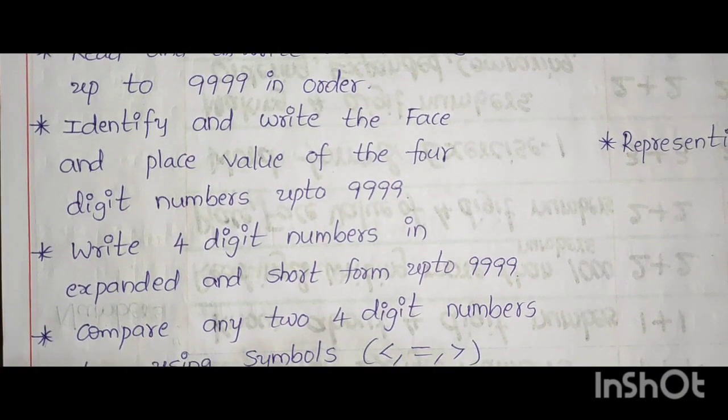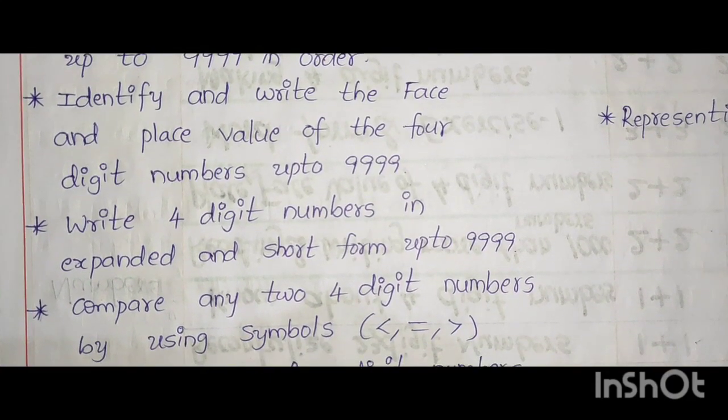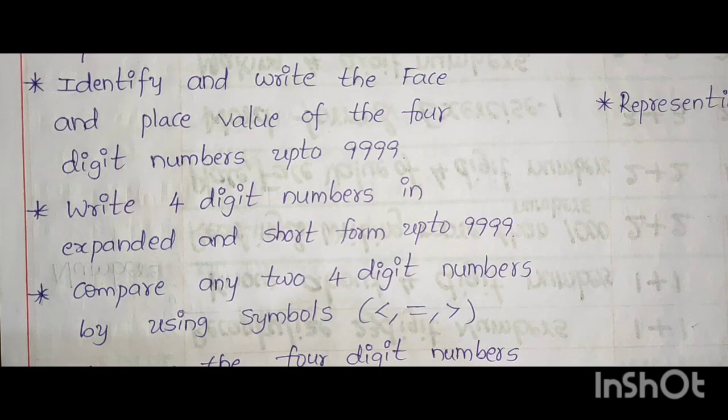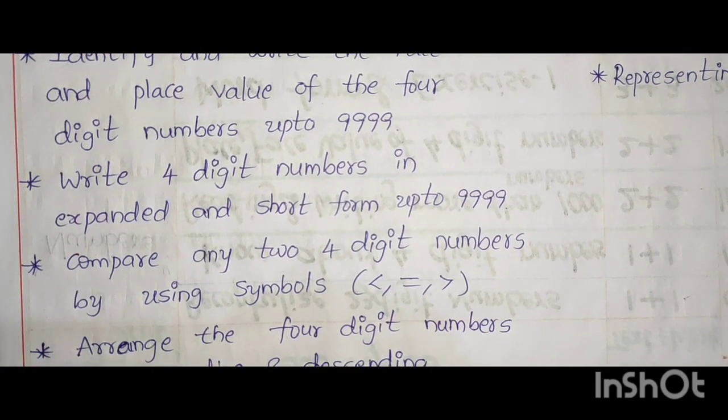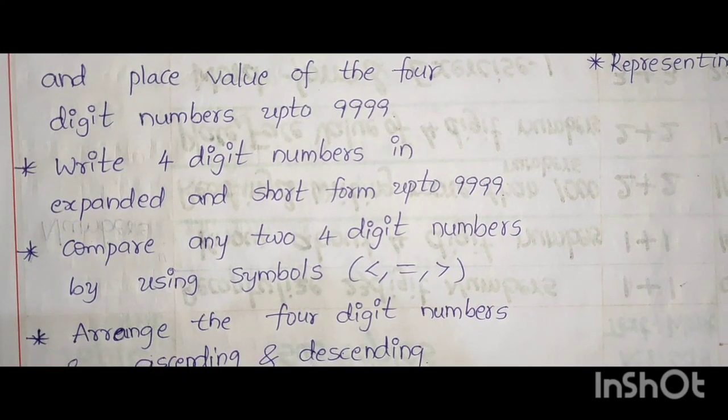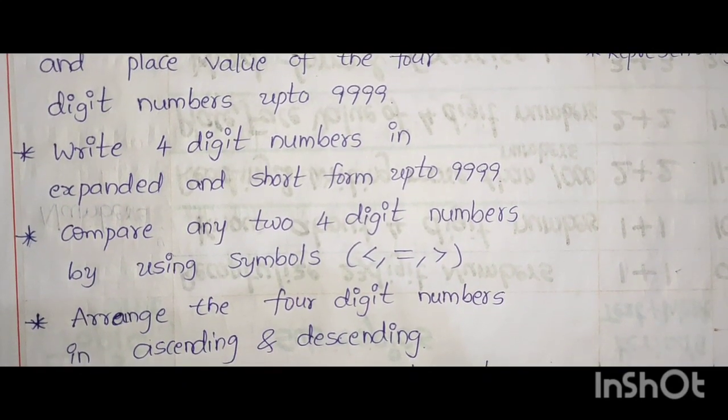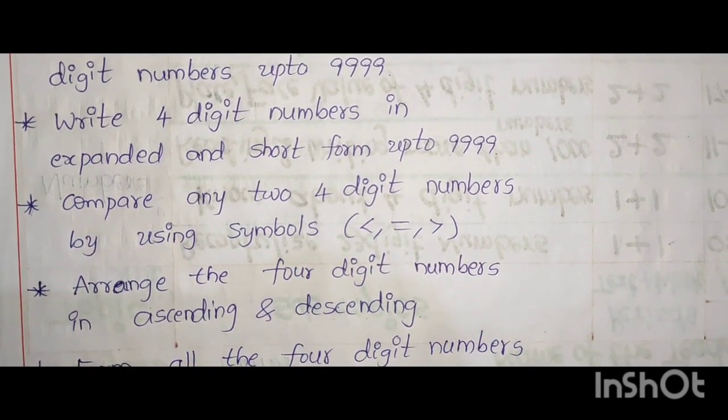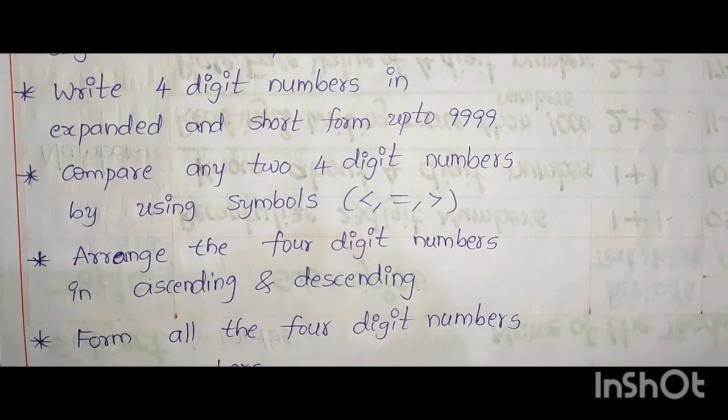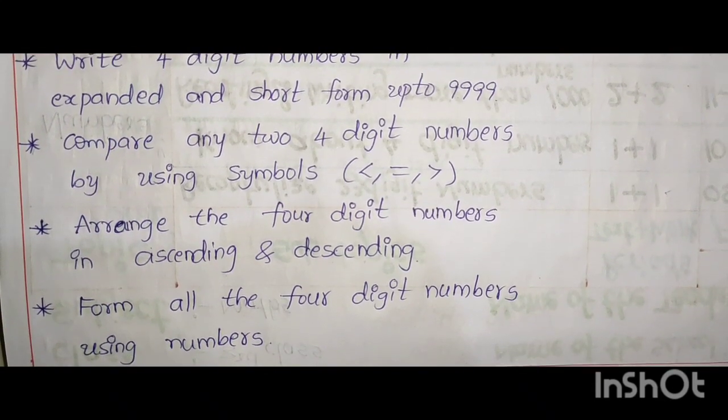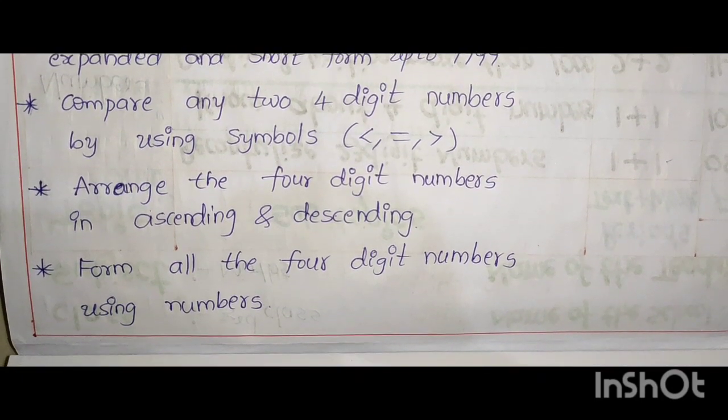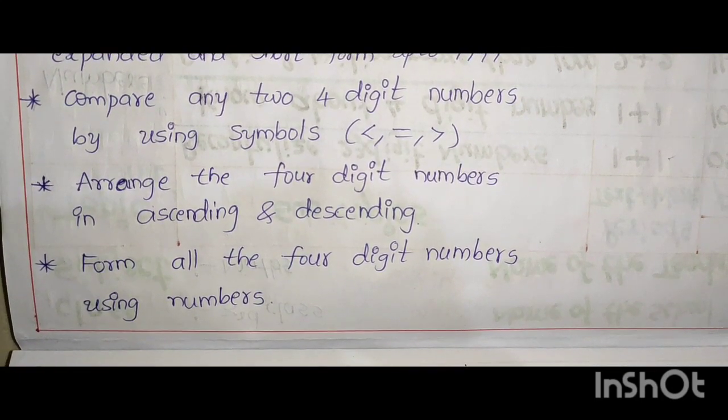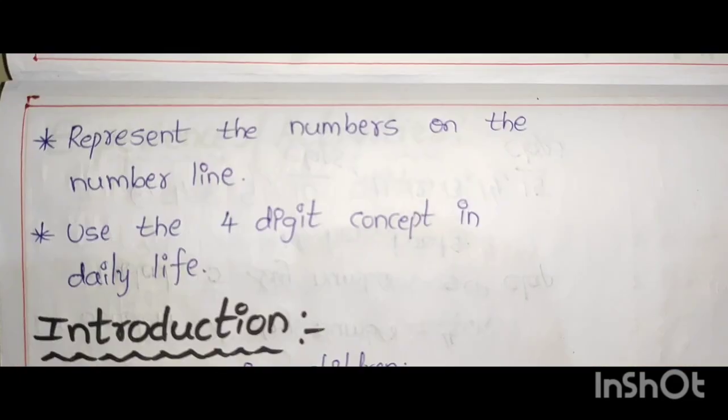Write 4 digit numbers in expanded and short form up to 9999. Compare any 2, 4 digit numbers by using symbols less than, equal, and greater than. Arrange the 4 digit numbers in ascending and descending. Form all the 4 digit numbers using numbers.